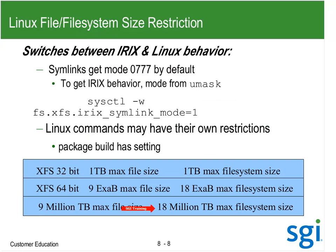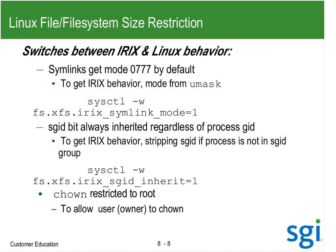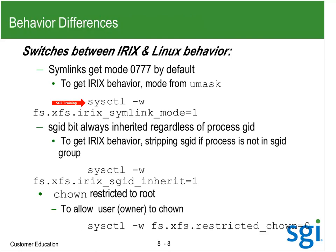SysCtl has a couple of IRIX behavior SysCtl parameters. SysLink mode determines where I get my umask from — whether it's going to be from umask — and there's an SGI ID inherit, and also whether I'm going to restrict your own.